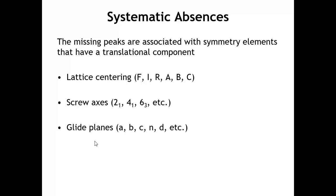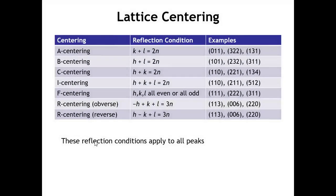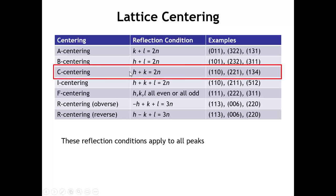Now we can be a little more systematic — pun intended — about the relationship between which peaks are missing and specific symmetry elements. Let's start with the lattice centering, which is the most important one generally and is usually where we would start in an analysis. For base centering where the centered base is the C face of the unit cell — perpendicular to the C axis — the only peaks we're going to see are those where H plus K is an even number.